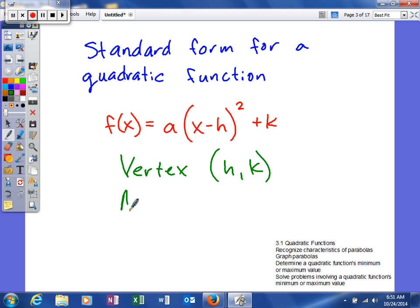All parabolas have this thing called an axis of symmetry. And the important thing you need to know about the axis of symmetry is it is a vertical line. So to find our vertical line, we're going to say x equals, because all vertical lines are x equals something. And in this case, it's going to be x equals h.